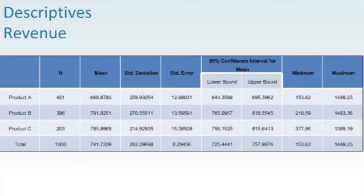So we can actually see that for Product A, we've got a sample size of 401, for Product B, we've got a sample size of 396, and for Product C, we've got a sample size of 203. So the nice thing about running ANOVA is you don't have to have equal sample sizes. You can run it with various sample sizes like we have in this example.